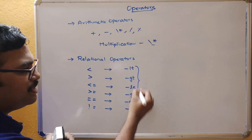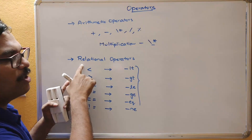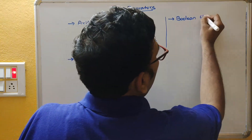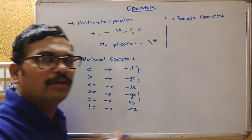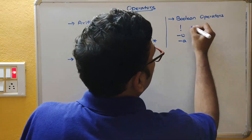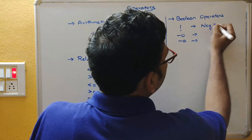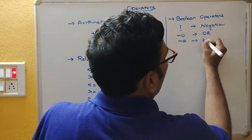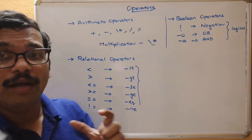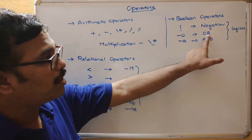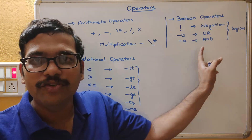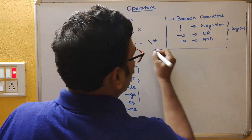The third one is boolean operators. Boolean operators are used between multiple conditions. We have negation, OR, and AND — these are logical operators. Instead of the OR symbol, we use hyphen-o (small o), and for the AND operator we use hyphen-a.